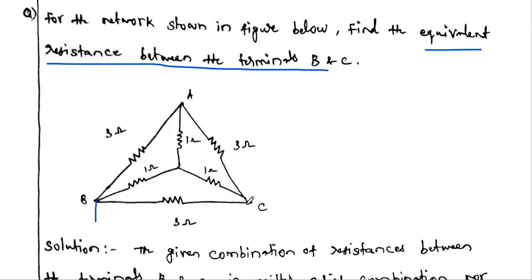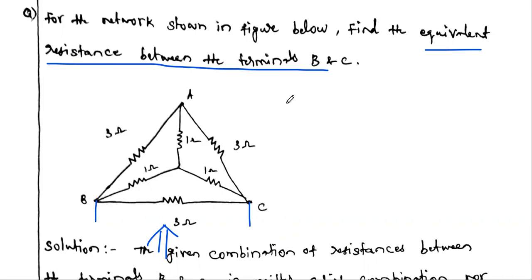This is terminal B and this is terminal C. Across terminals B and C, we have to find the equivalent resistance — reducing the entire network to one single resistance between B and C. While reducing the network, we reduce from the last end toward this end.